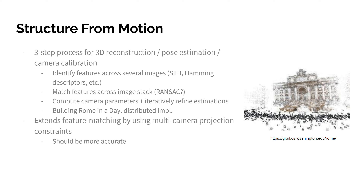The specific multiple view geometry algorithm I chose is called Structure from Motion. It's a three-step process that first identifies features across your image set, then matches features to determine which ones correspond to the same 3D points, and then computes the camera parameters using the given constraints and iteratively refines them. This is an extension on feature matching, and I believe it will be better than template matching because it uses camera projection constraints to refine the guesses over time, which should make it more accurate.